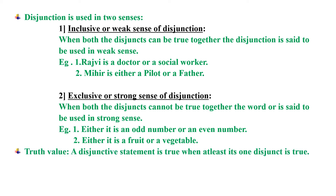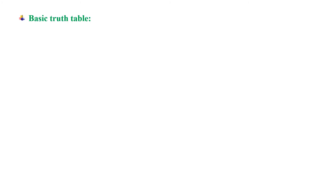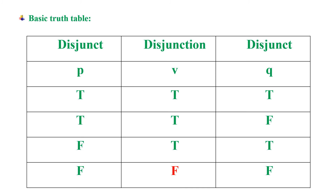Truth value of disjunctive statement: A disjunctive statement is true when at least one of its disjuncts is true. That is, if any one disjunct is true, that is sufficient for the whole statement to be true. It is false only under one condition — when both the disjuncts are false. Let us see the basic truth table. A disjunctive statement is true when at least one disjunct is true, meaning any one true disjunct is sufficient for the whole disjunctive statement to be true.